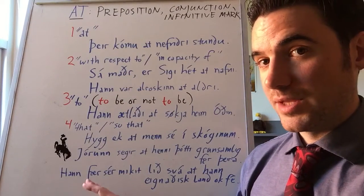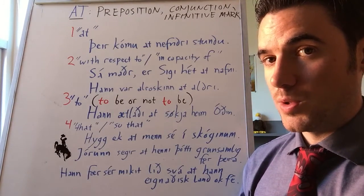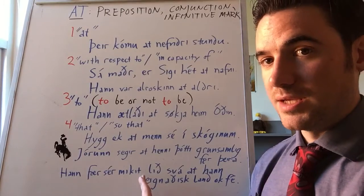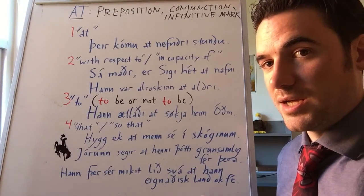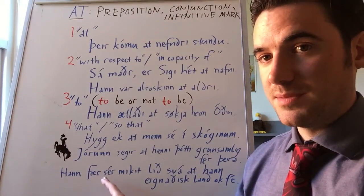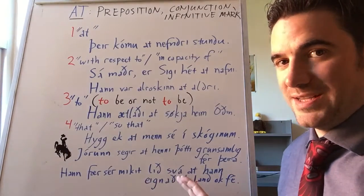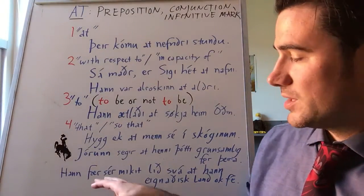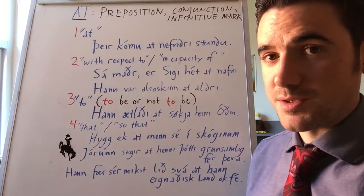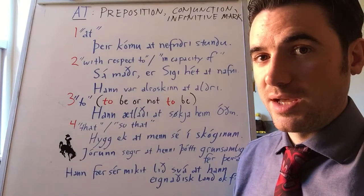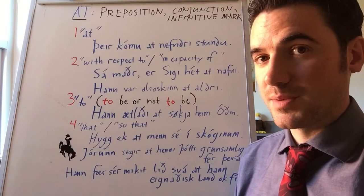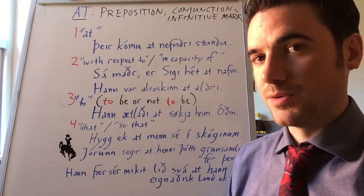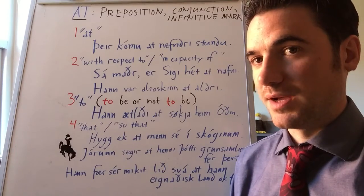In a related sense, 'at' can appear with 'svá' — the word 'so' — meaning 'so that.' For example: he gets himself a great army so that he comes into possession of land and property. This is similar because we're translating it in English by 'that.' Again, 'that' may not be necessary in English — we can say 'he gets himself a big army so he comes into possession of land and property' — but in Old Norse we do have to use the equivalent of 'that'; we have to use 'at.'